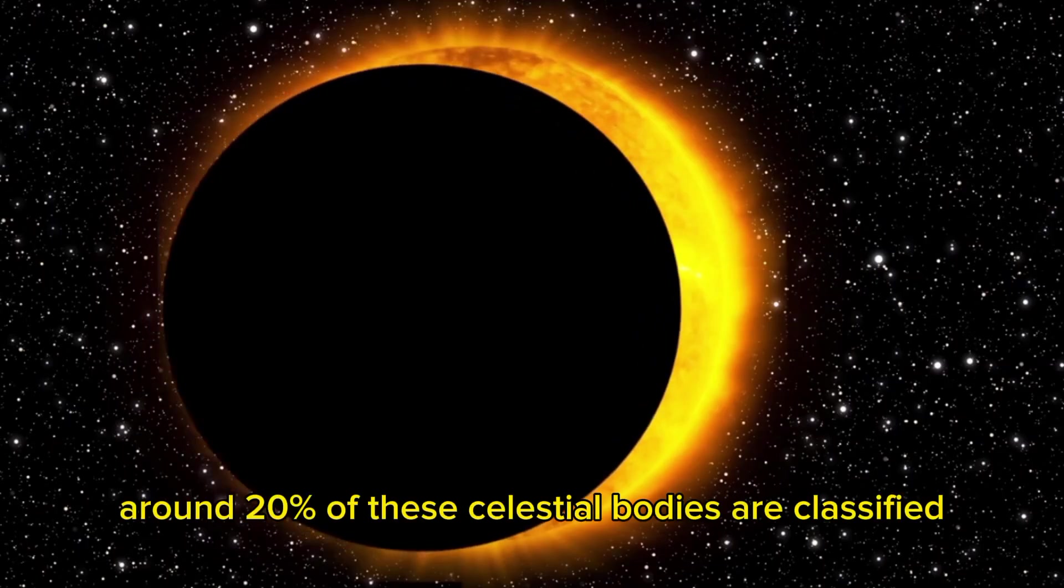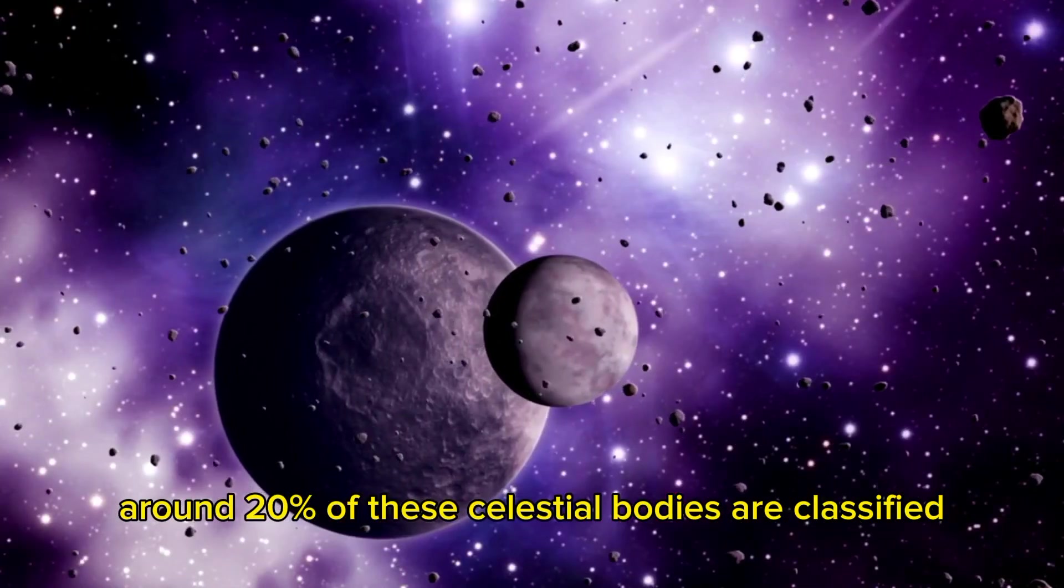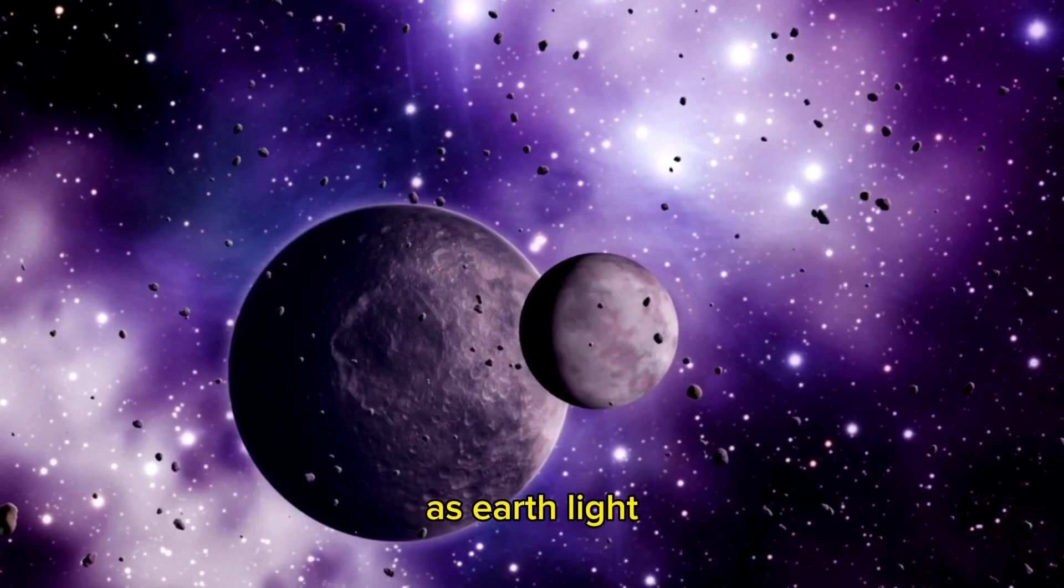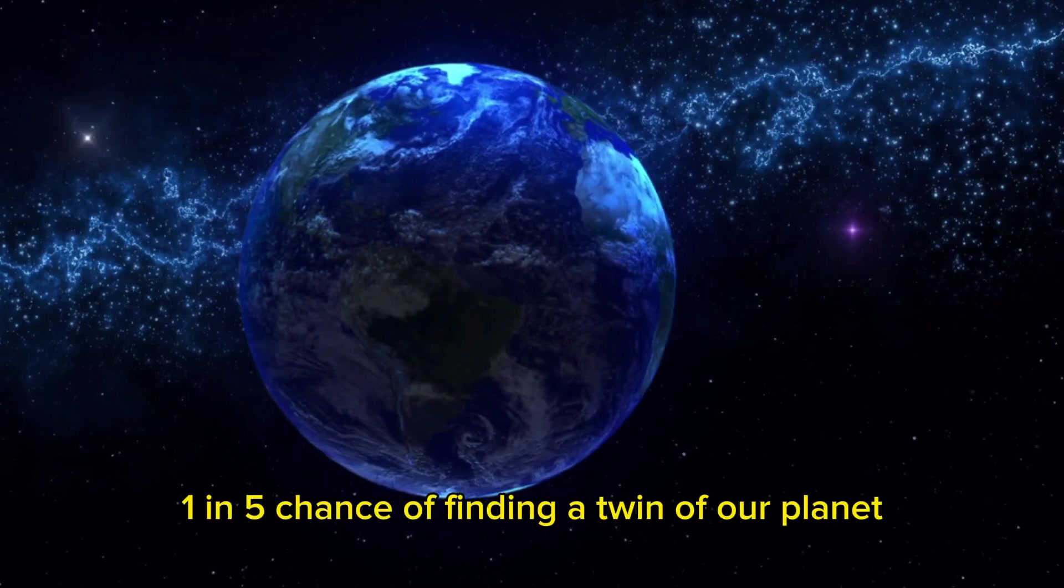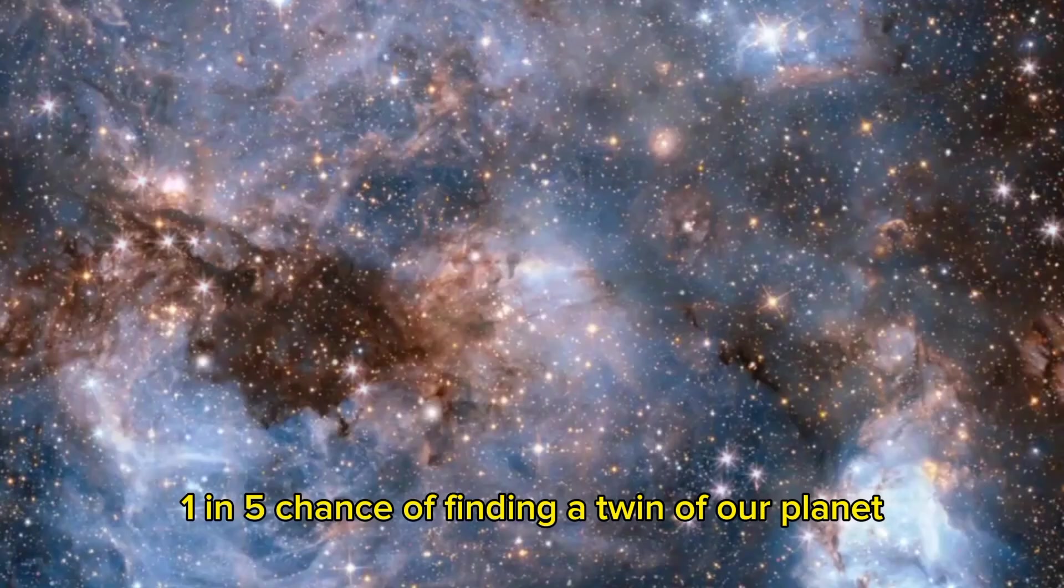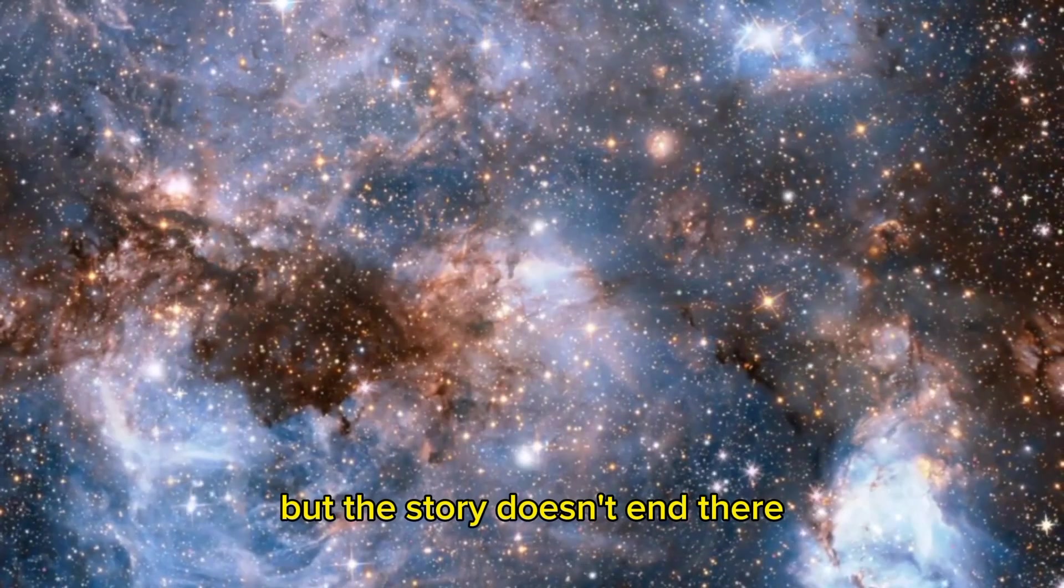What's even more astonishing is that around 20% of these celestial bodies are classified as Earth-like in terms of geology and atmospheric composition. This means there's a 1 in 5 chance of finding a twin of our planet. But the story doesn't end there.